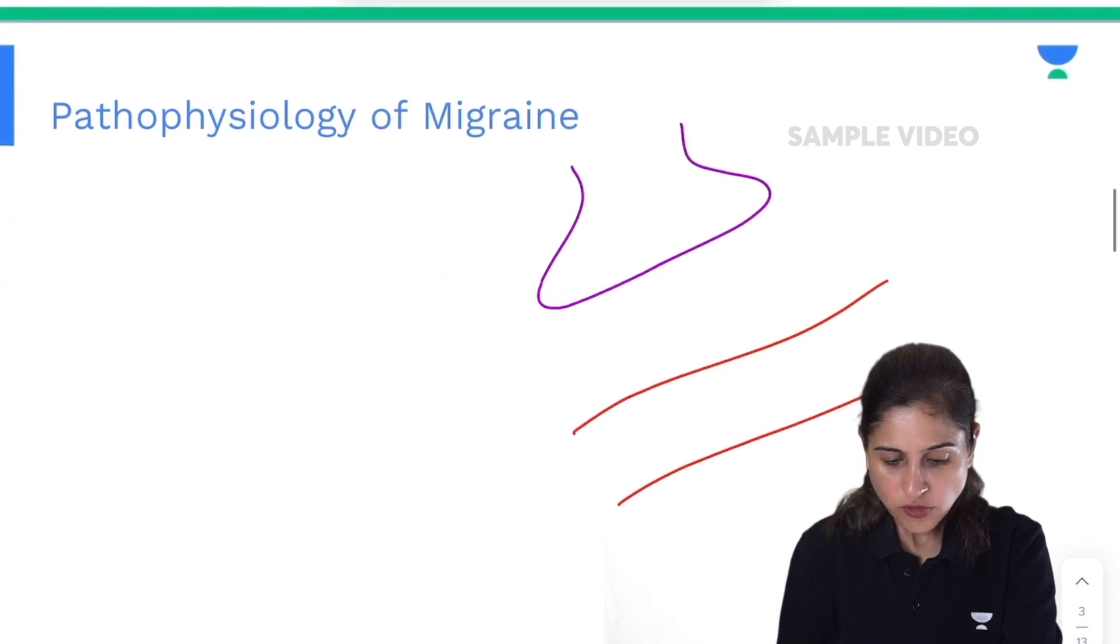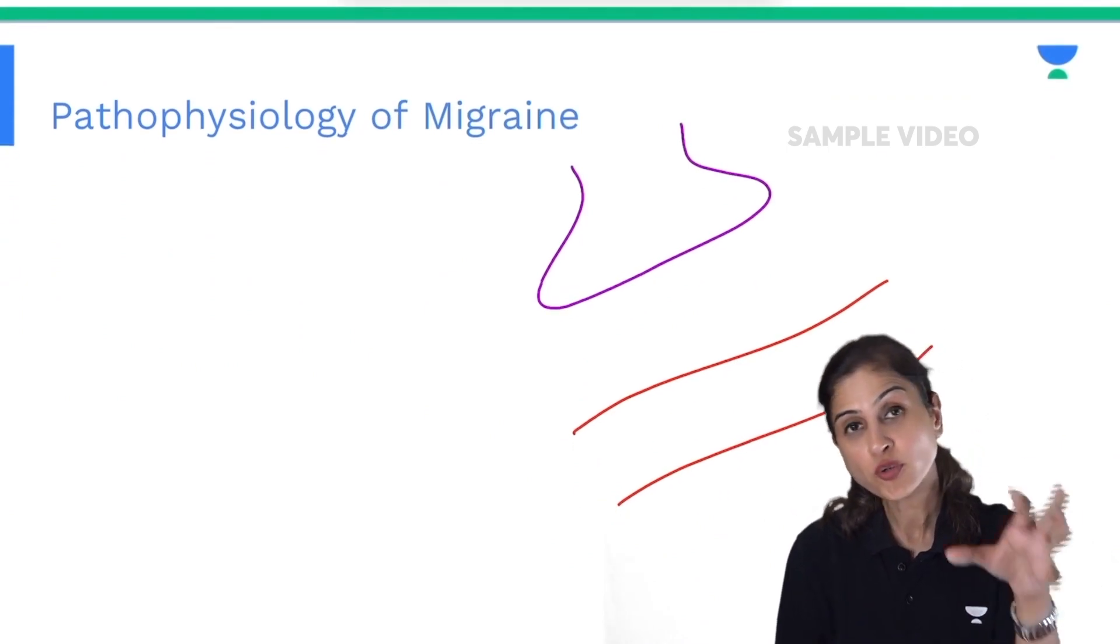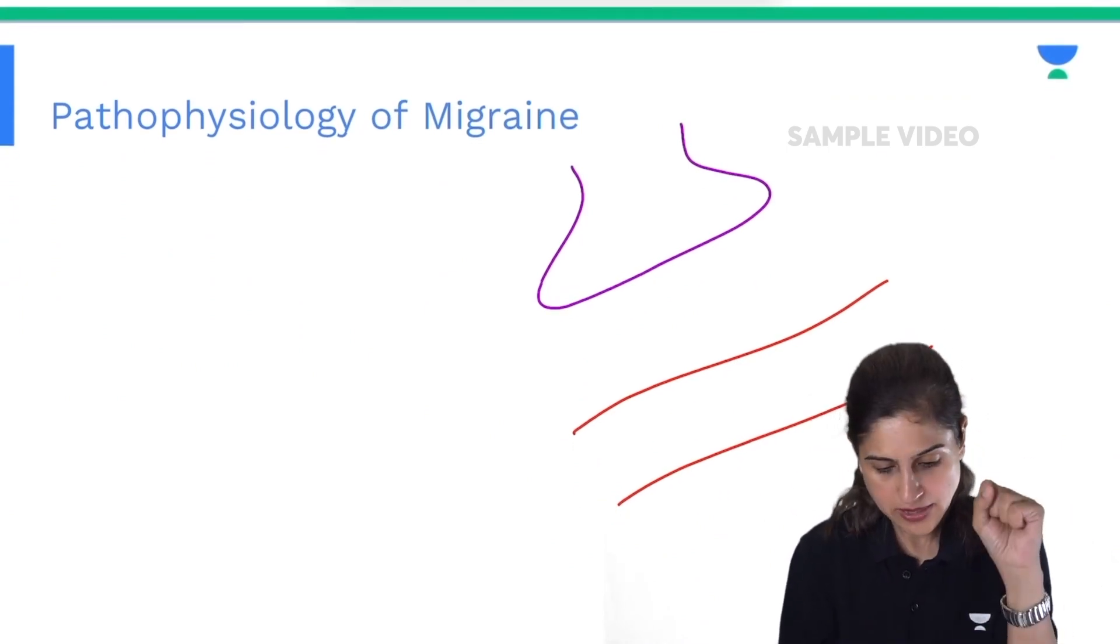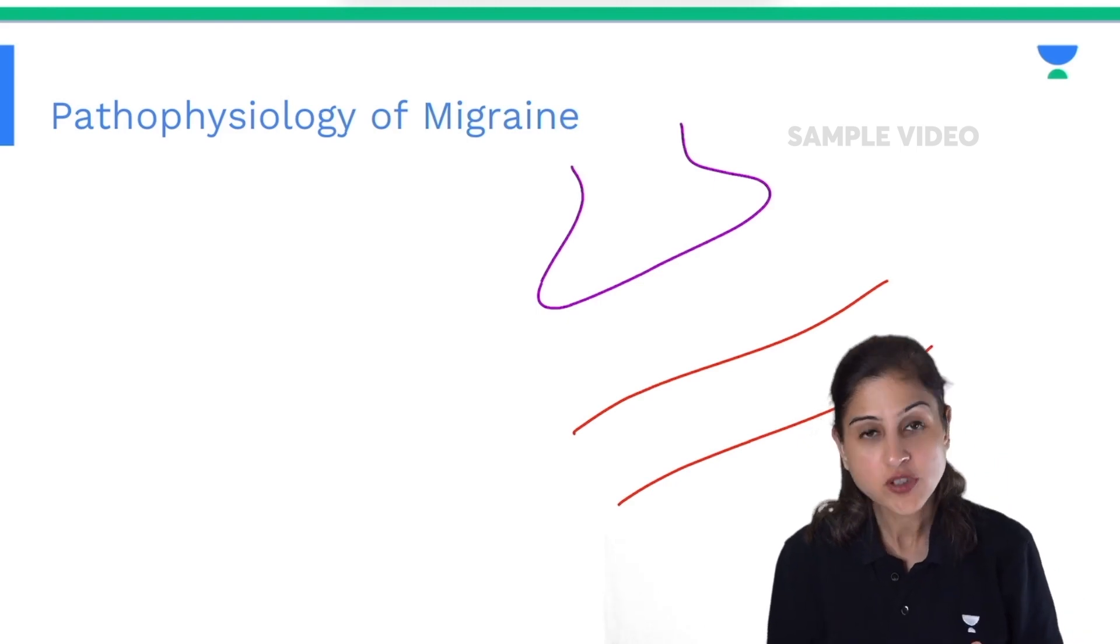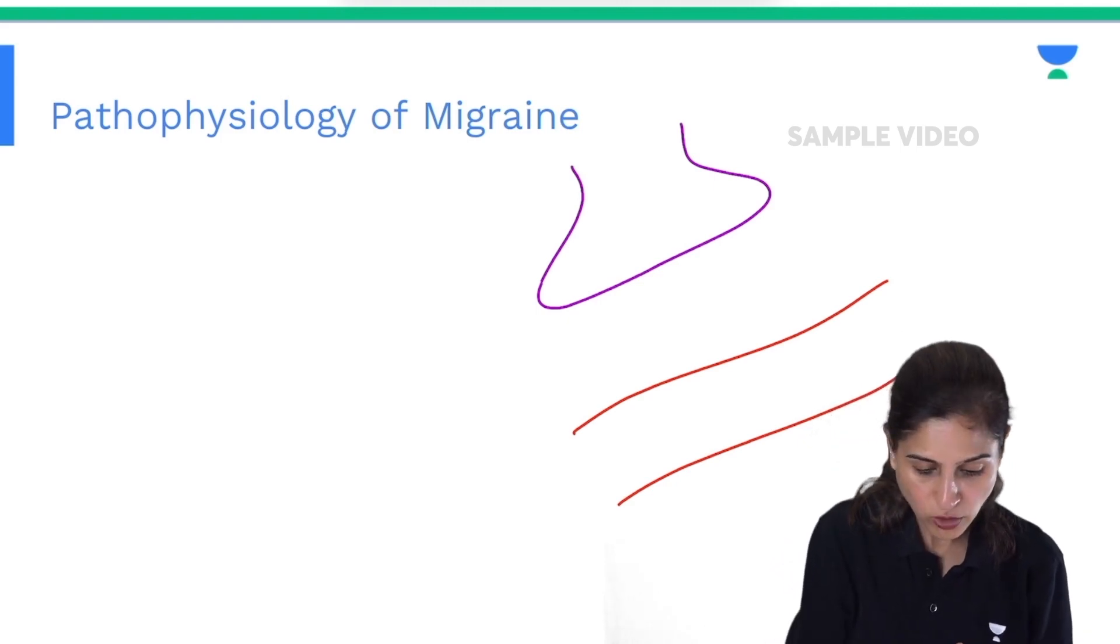Let's discuss the pathophysiology of migraine first before going on to the drugs which are effective against it. The pathophysiology of migraine is said to be neurovascular in nature.